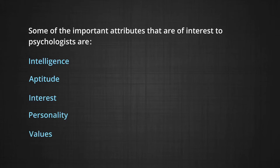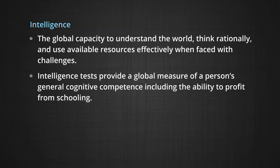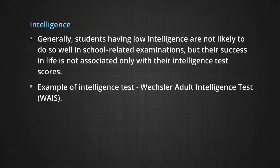We will now learn more about each of these attributes. Intelligence is the global capacity to understand the world, think rationally and use all resources effectively when faced with challenges. Intelligence tests provide a global measure of a person's general cognitive competence, including the ability to profit from schooling. Generally, students with low intelligence are not likely to do well in school examinations, but their success in life is not associated only with their intelligence test scores. An example of an intelligence test is the Wechsler Adult Intelligence Test.